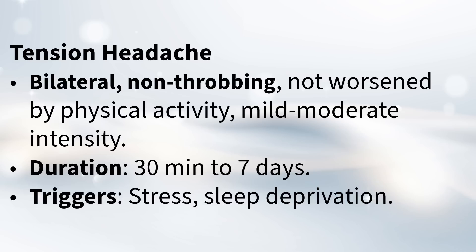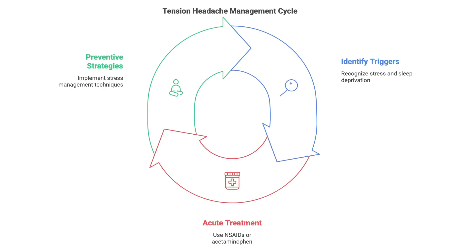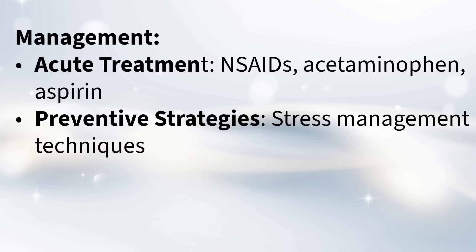The biggest culprits for tension headaches are stress and not enough sleep. So if you're feeling overwhelmed or not getting good rest, you're more likely to get one. For treatment, it's often similar to milder migraines — over-the-counter painkillers like NSAIDs, acetaminophen, or aspirin. For prevention, since stress is a big trigger, they recommend stress management techniques like regular exercise, mindfulness, or just making sure you get enough sleep.